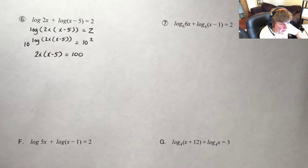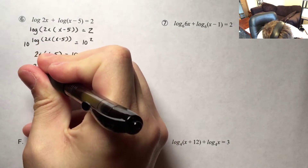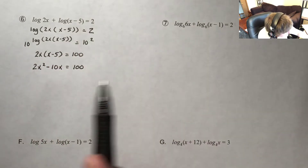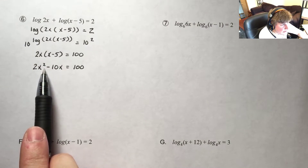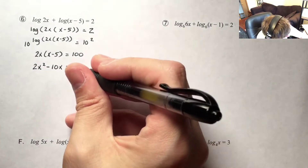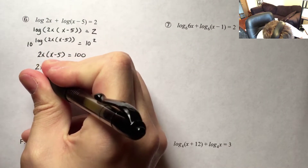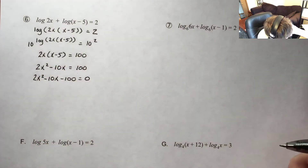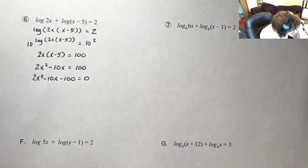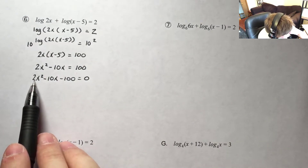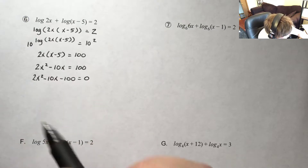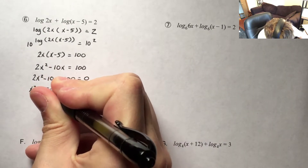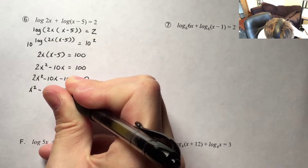As I look at that, I can distribute. So I get 2x squared minus 10x is equal to 100. This problem has a variable with an exponent higher than 1, so it's going to require factoring. I have to set it equal to 0 by subtracting 100. The first step in factoring is to find the greatest common factor, which is 2. So: 2x squared divided by 2 is x squared, negative 10 divided by 2 is negative 5x, and negative 100 divided by 2 is negative 50.